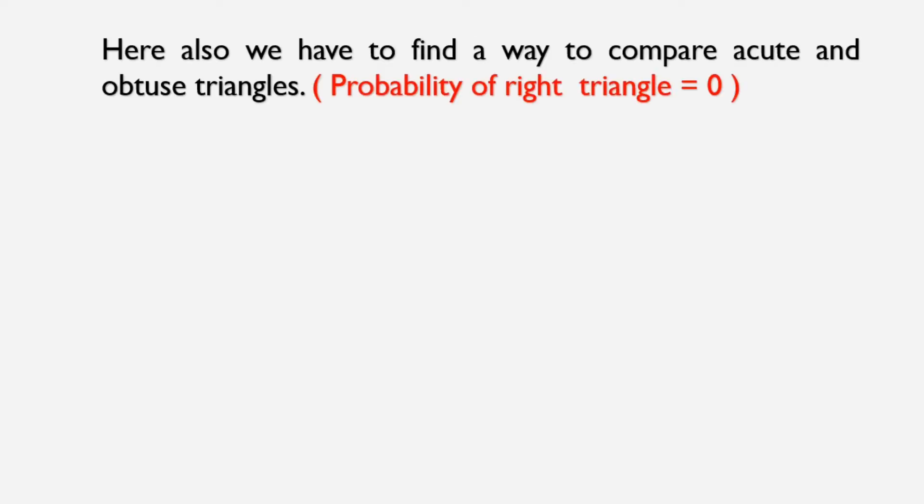Here also we have to find a way to compare acute and obtuse triangles. Probability of selecting a right triangle is 0 because in comparison to acute and obtuse triangles there are negligible number of right triangles present in the infinite plane.